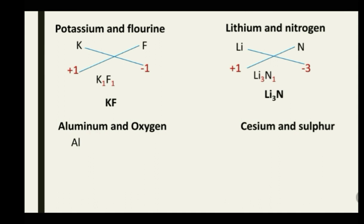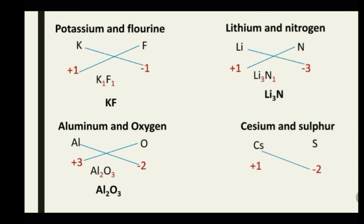For aluminum and oxygen: aluminum (Al) is named first with a charge of +3, and oxygen (O) has a charge of -2. Crossing them gives Al₂O₃ — the subscripts cannot be simplified further, so the formula is Al₂O₃. Finally, for cesium and sulfur: cesium (Cs) is a Group 1 element with a charge of +1, and sulfur (S) has a charge of -2. Crossing them and ignoring the 1 gives Cs₂S.